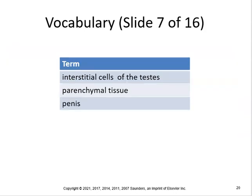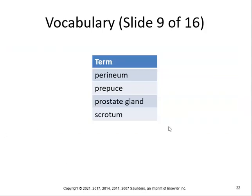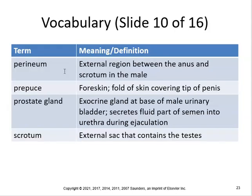Interstitial cells of the testes are specialized cells adjacent to the seminiferous tubules that produce testosterone; they are also called Leydig cells. Parenchymal tissue refers to the essential, distinctive cells of an organ. The penis is the male external organ of reproduction. The perineum is the external region between the anus and the scrotum in the male.